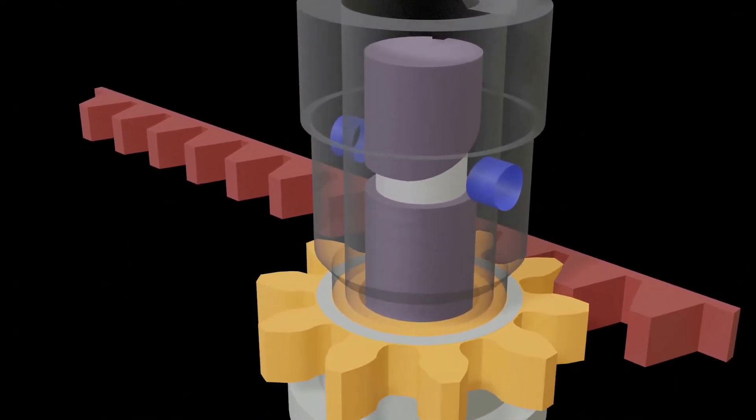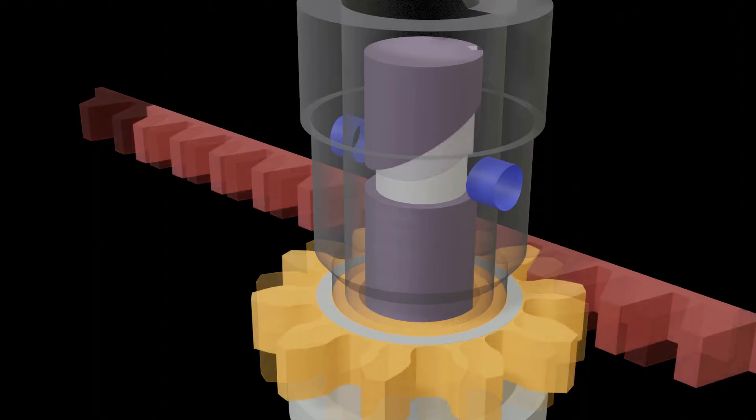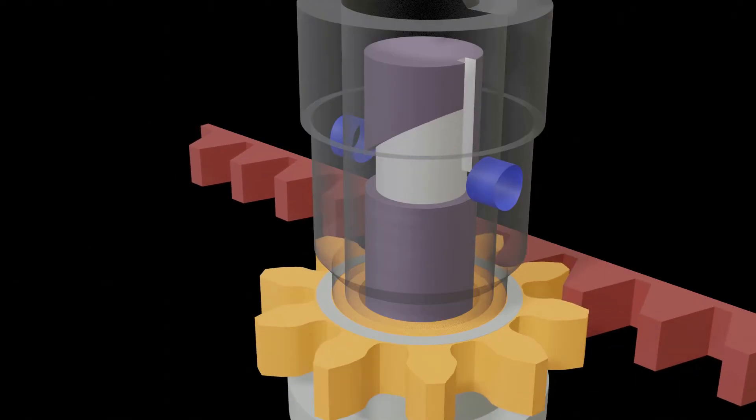Rotation of the plunger causes the helix to uncover the spill port either earlier or later, to give less or more fuel. Rotating the plunger to make the vertical groove coincide with the spill port means no fuel will be delivered.